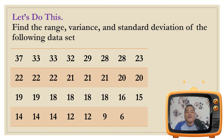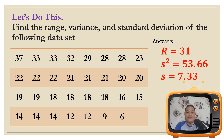Now it's your turn. Find the range, the variance, and the standard deviation of the following data set. You may pause the video to answer. The answers are: the range is 31, the variance is 53.66, and the standard deviation is 7.33. Did you get everything right? Great job!